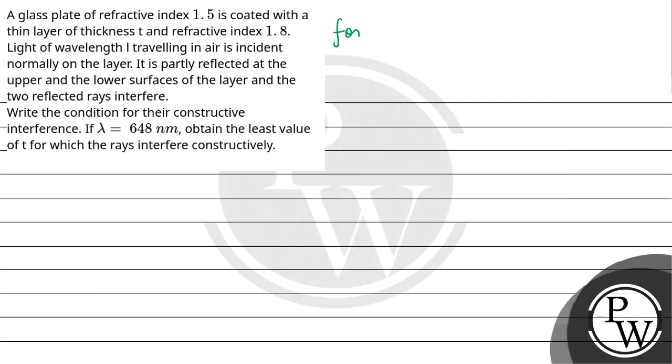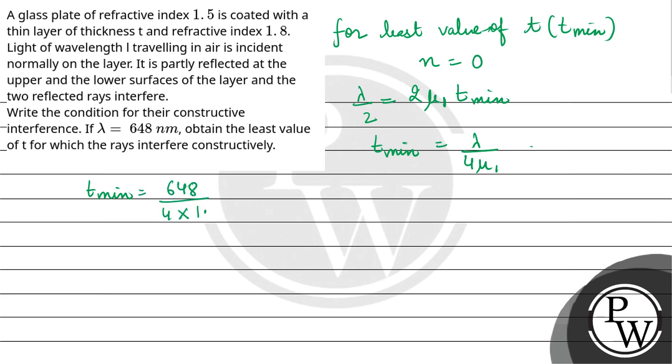For t minimum, that is the least value of t, t minimum is equal to lambda by 4μ. So t minimum is equal to 648 upon 4 times 1.8. This is equal to 90 nanometer.